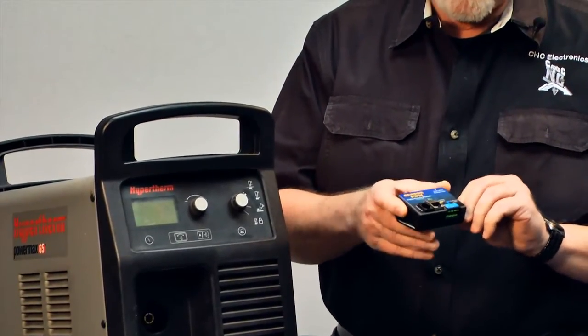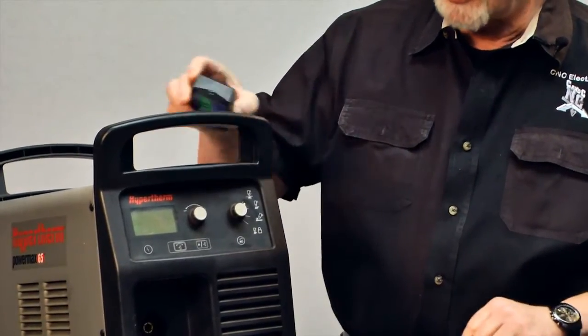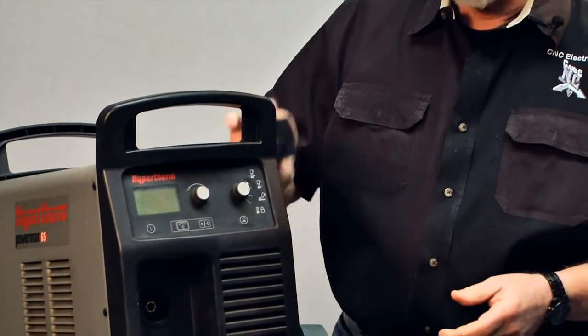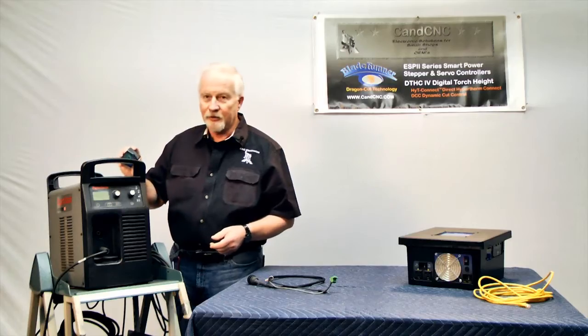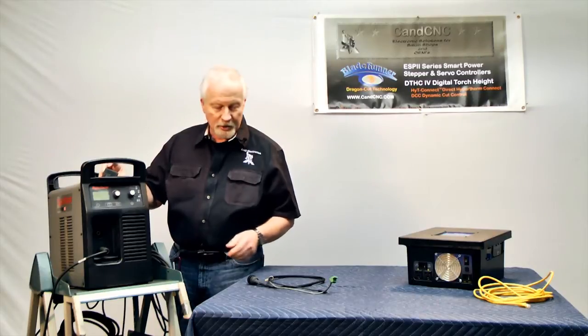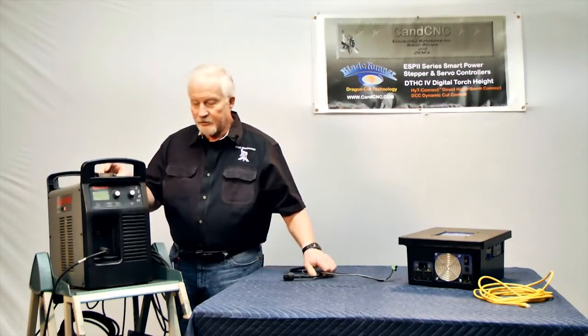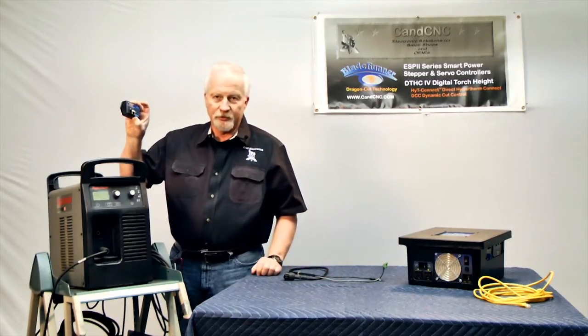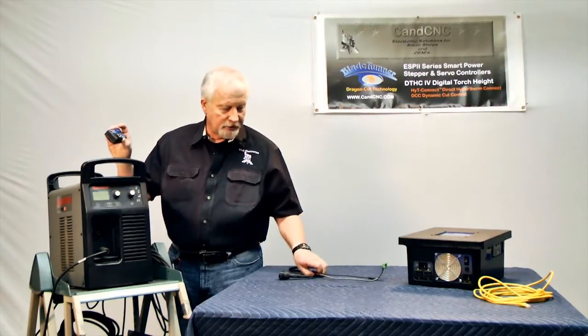But this module is made to mount at the Hypertherm. You can either mount it on the side, on the top, on the back, wherever you want it. It's got a short cable that comes with it. This comes with all of our torch height control systems. It's called a PWM module.